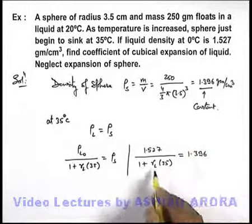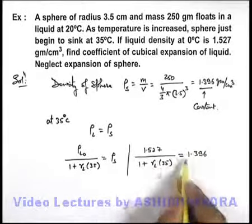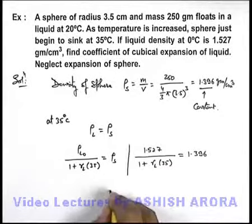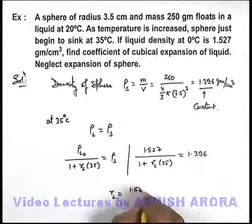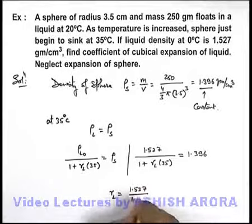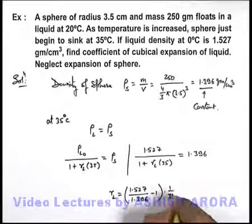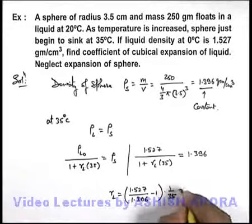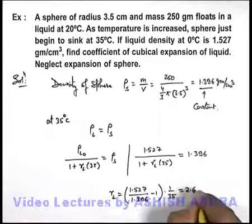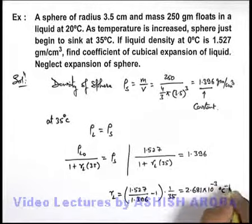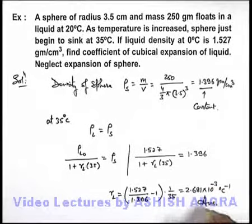On solving, if we just cross multiply the relation on both sides of equality we'll get gamma of liquid is equal to 1.527 by 1.396 minus 1, into 1 by 35. On solving this equation, the result will be 2.681 into 10 to power minus 3 per degree centigrade. That'll be the answer to this problem.